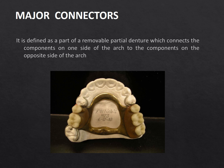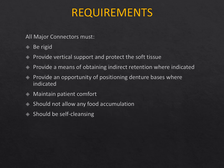Coming to the first: the major connector. A major connector is defined as the part of the RPD which connects the components on one side of the arch to the other side of the arch. It is the heart of a removable partial denture — the major construction element that forms the bulk of the RPD metal framework. It connects components like rests, reciprocal arms, direct retainers (the clasp assembly), the saddle (also known as minor connectors), and the indirect retainers anterior to the fulcrum line.